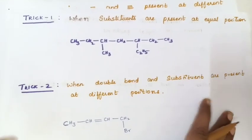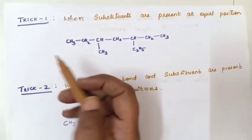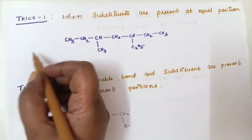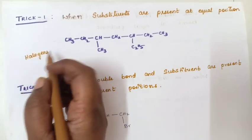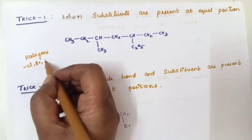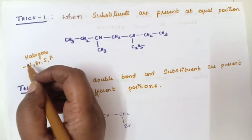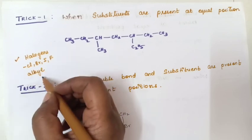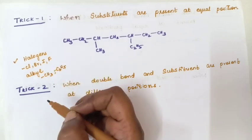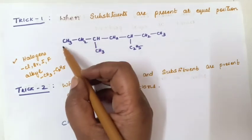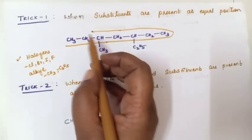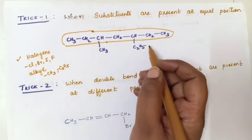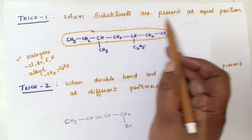Trick number 1: when substituents are present at equal position. Always remember that halogens — that is, chloro group, bromo group, iodo group, and fluoro group — will be substituents, and also alkyl groups such as methyl group (CH3) and ethyl group (C2H5). Here you can see the parent chain. Select the longest chain — here a methyl group and an ethyl group are present as substituents.